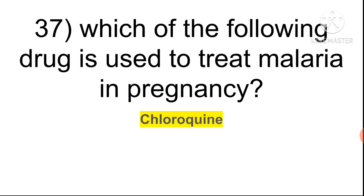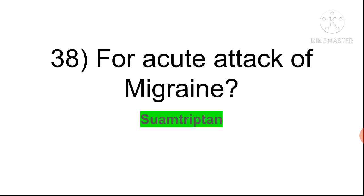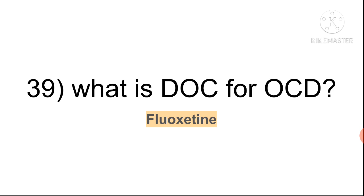Question thirty-seven: drug used to treat malaria in pregnancy is chloroquine — a safe drug that can be used in pregnancy. For acute attack of migraine headache, the drug is sumatriptan — the triptan family. Question thirty-nine: drug of choice for obsessive compulsive disorder (OCD) is fluoxetine.